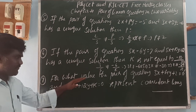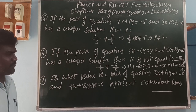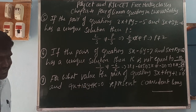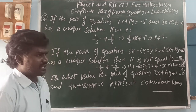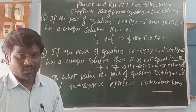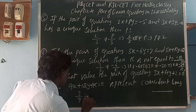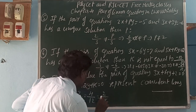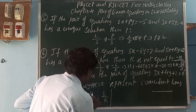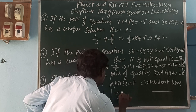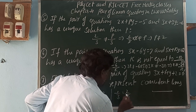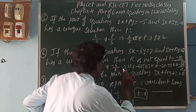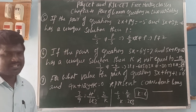Next, for what value of k do the pair of equations 3x plus 4y plus 2 equals 0 and 9x plus 12y plus k equals 0 represent coincident lines? Coincident lines means the three ratios are equal. The x coefficient ratio is 3 by 9 equals 1 by 3. The y coefficient ratio is 4 by 12 equals 1 by 3. Setting 1 by 3 equal to 2 by k: cross-multiplying gives k equals 6. So for k equals 6, the lines are coincident.